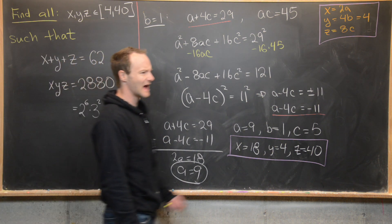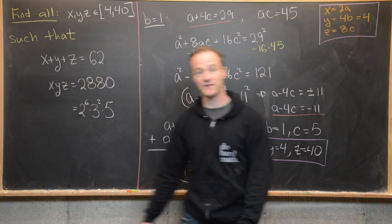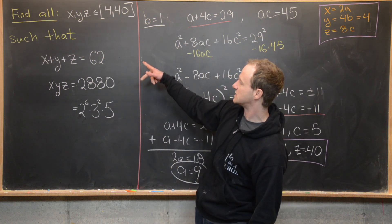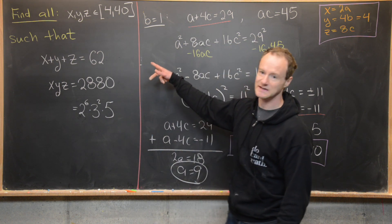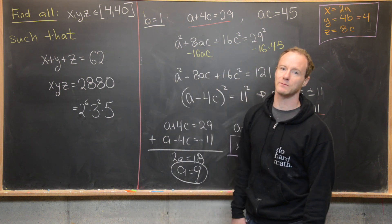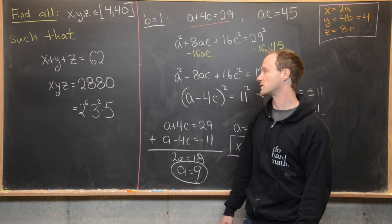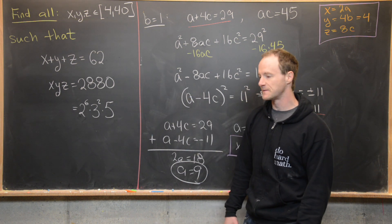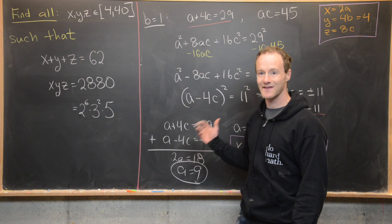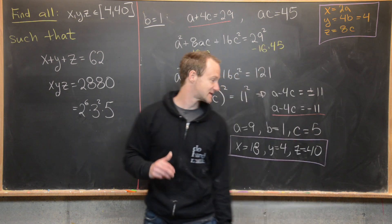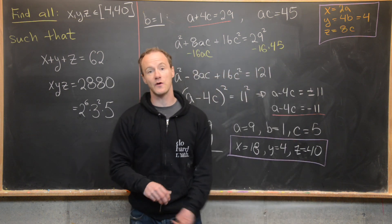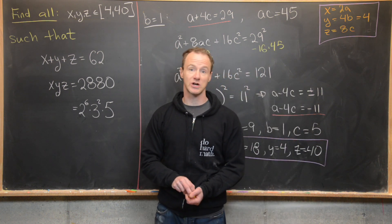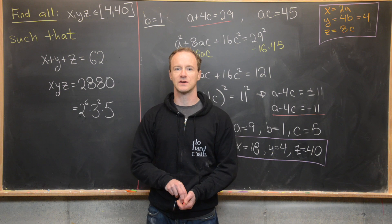There's a theorem in algebraic geometry that gives you a maximum expected number of solutions for such a system of polynomial equations. Since we've found these six permutation solutions, we know we have all of them. And that's a good place to stop.